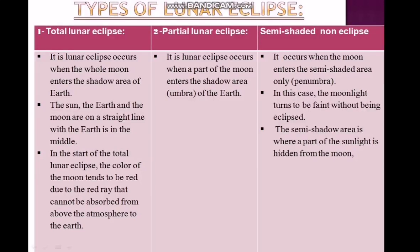In the partial Lunar Eclipse, it occurs when part of the Moon enters the shadow area of the Earth, and part of it disappears while the other part remains visible.